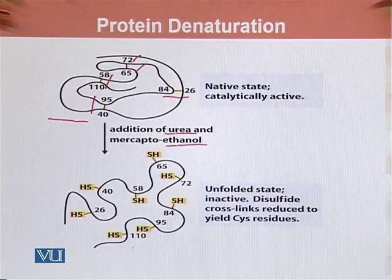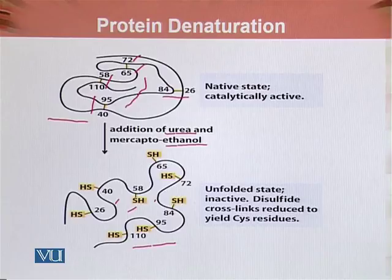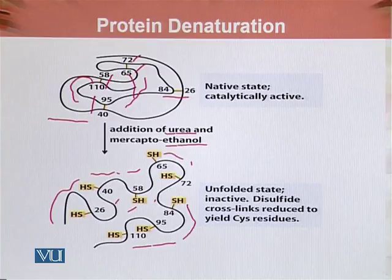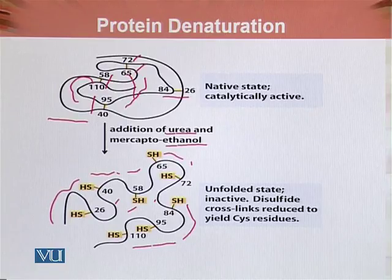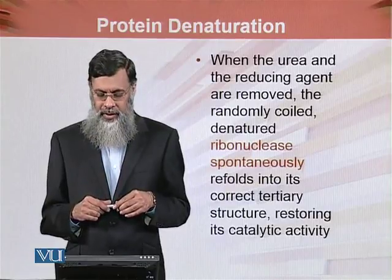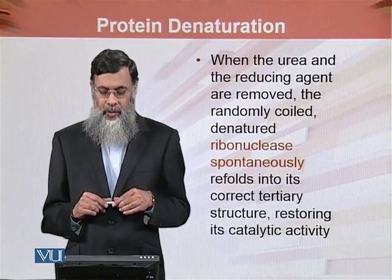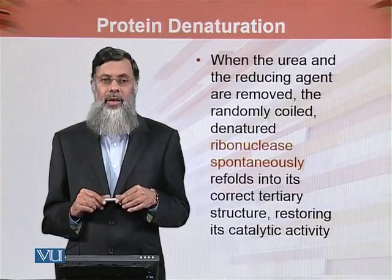When concentrated urea and mercaptoethanol — which is the reducing agent — are added, this produces the unfolded state where the disulfide bonds are broken. The folding is lost and only the primary structure remains. This is not the conformational structure required for the activity of the enzyme. Ribonuclease A's enzymatic activity depends on its conformational native structure, which is disrupted when the three-dimensional conformation is lost.